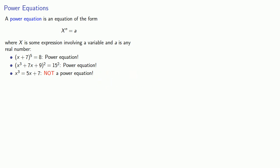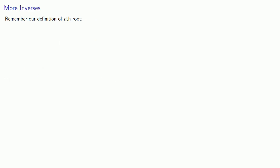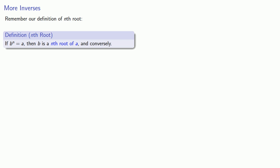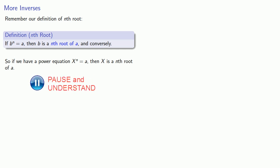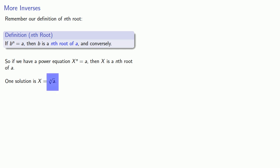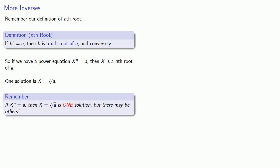The important idea here is that we can solve power equations by taking the nth root. Remember: if b to power n equals a, then b is an nth root of a. Comparing this to our power equation x to power n equals a, x is an nth root of a. So we can write down one solution: x equals the nth root of a. When we write this symbol, we're referring to the principal nth root of a, and there may be others.